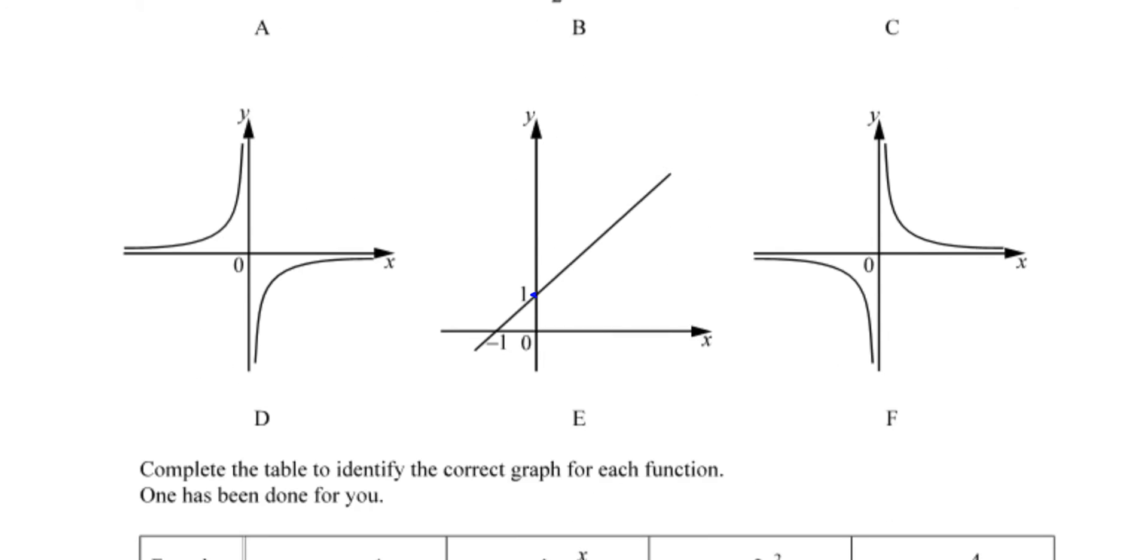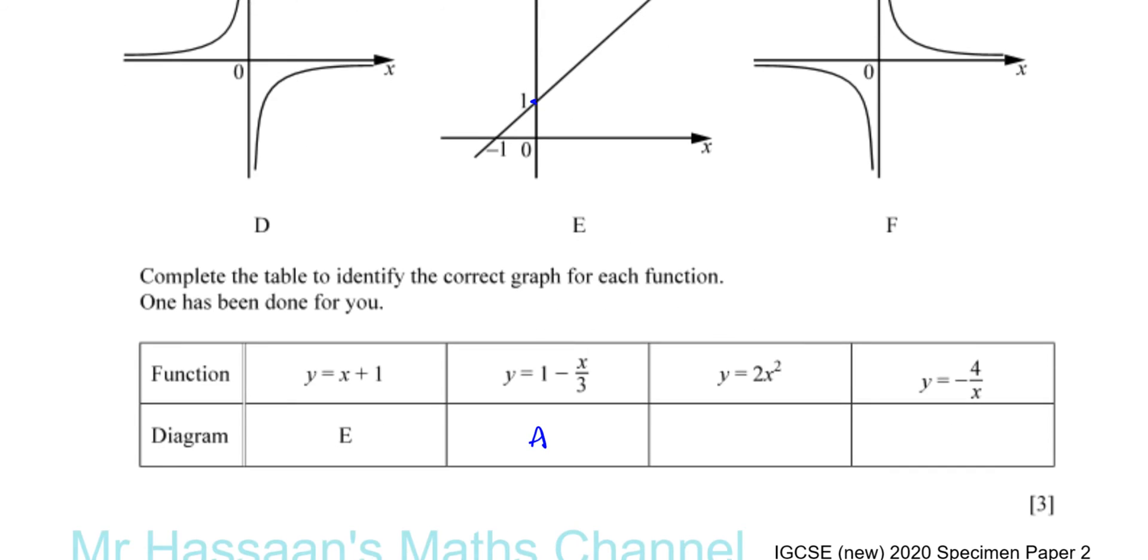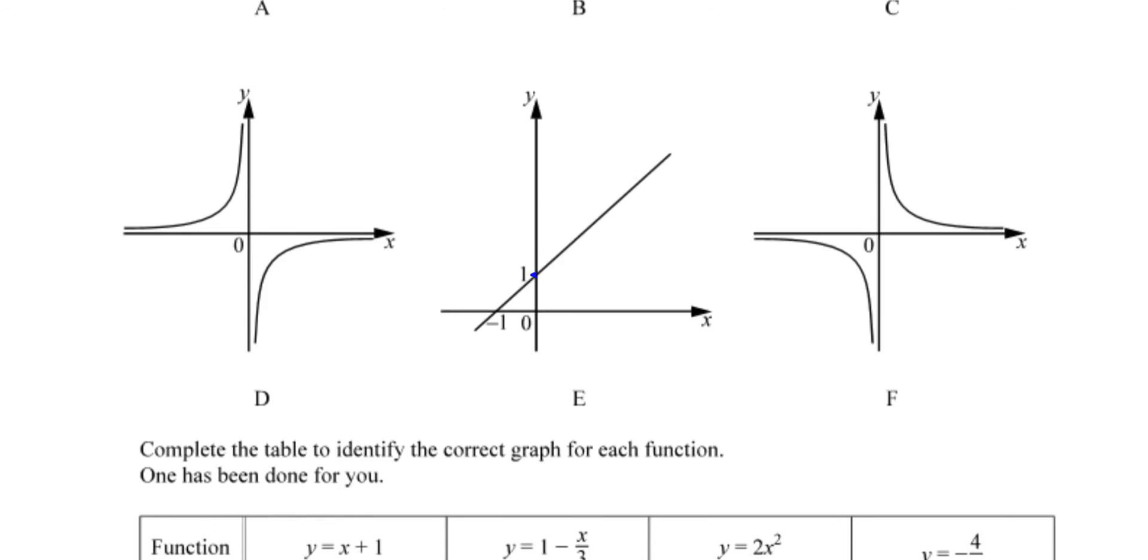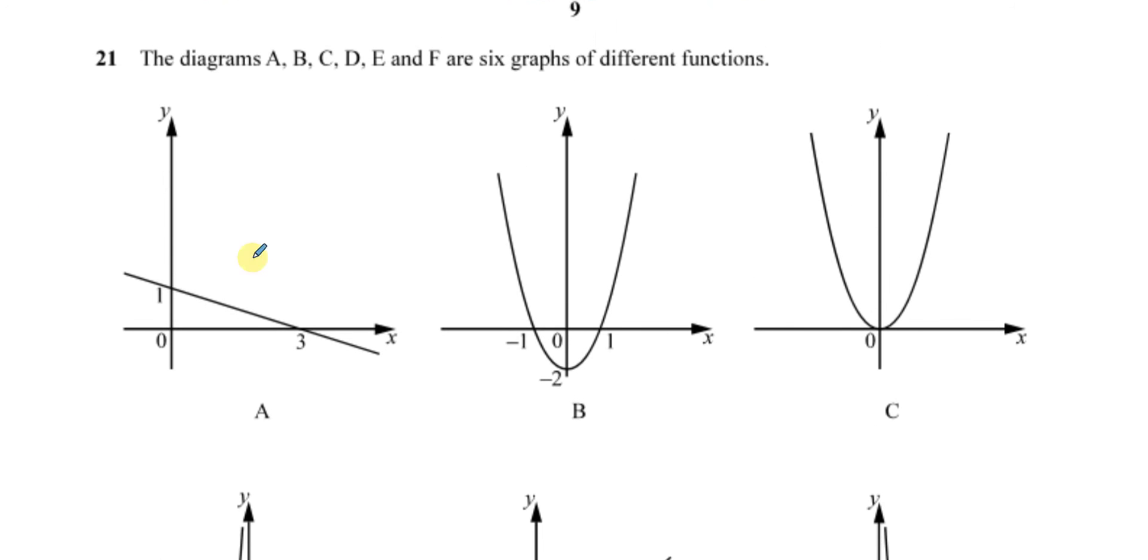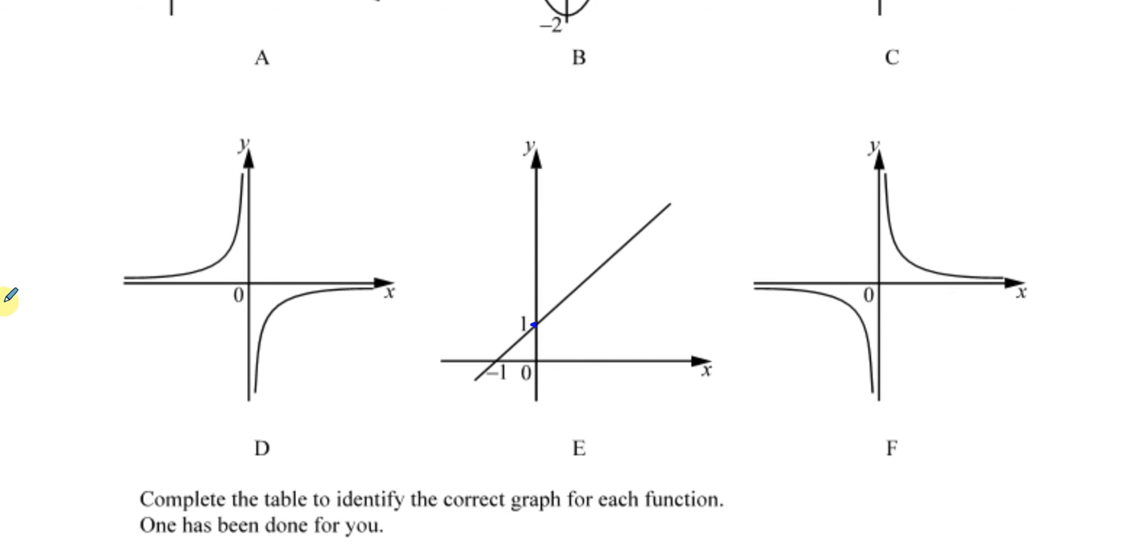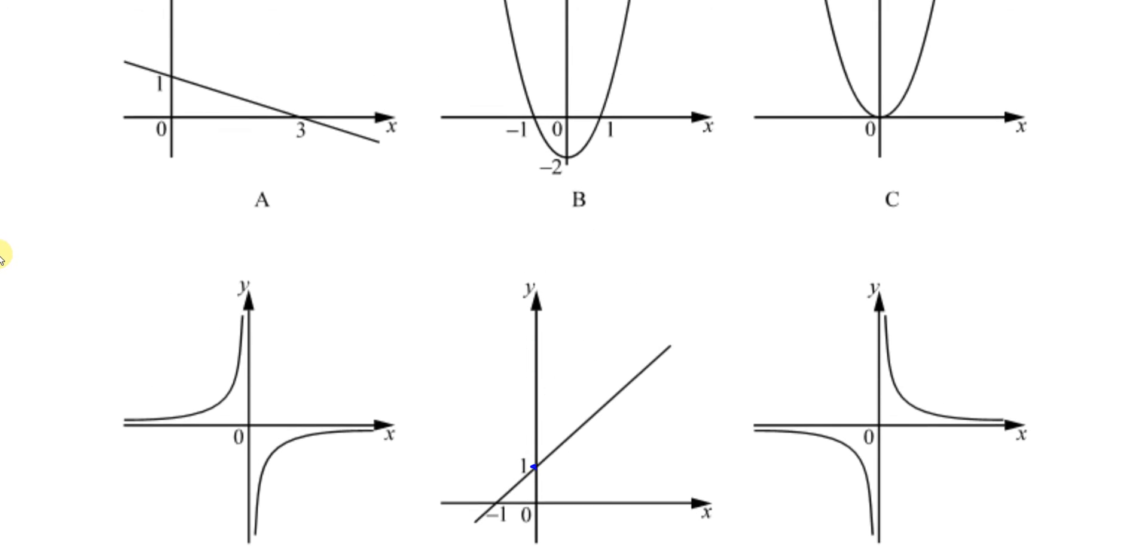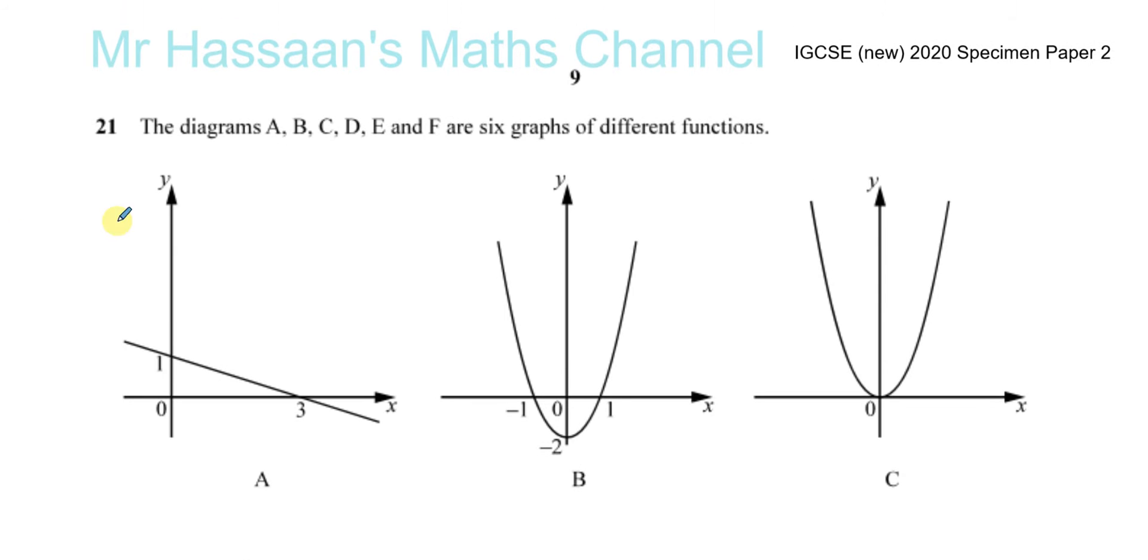Then it says y = 2x². That's a quadratic graph, right? The only two graphs here that look like they're quadratic are B and C. D and F are called reciprocal graphs—we have 1/x, x in the denominator. A and E are linear graphs, so the only two it could be is B and C.